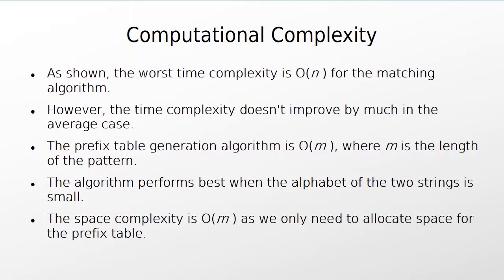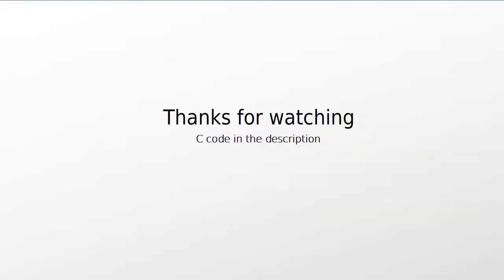The worst-case time complexity for the matching is O(N), as you would have to search linearly through each element of the input string. This was demonstrated in the previous example, where each half of the input string and the pattern only differed in the last character. However, the time complexity doesn't improve much in the average case, and is still in the order of O(N). If the algorithm is implemented cleverly, the prefix table generation has time complexity O(M), where M is the length of the pattern. The algorithm performs best when there is a large number of repeated substrings in the input and pattern, which typically happens when the alphabet is small. You only need to allocate space for the prefix table, so the algorithm has a space complexity of O(N). We have provided a link to an implementation of the KMP algorithm in C in the description. Thanks for watching.